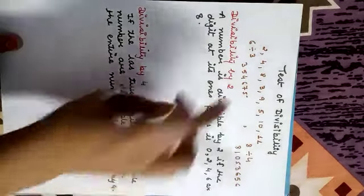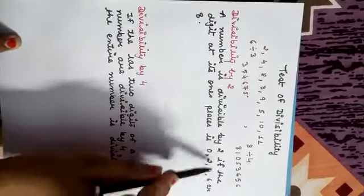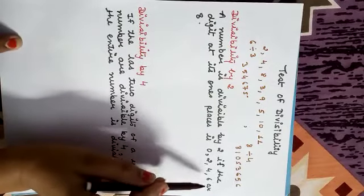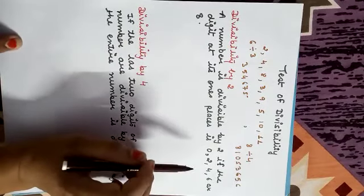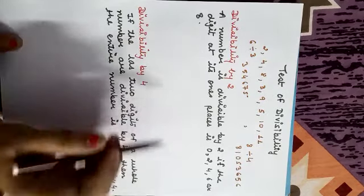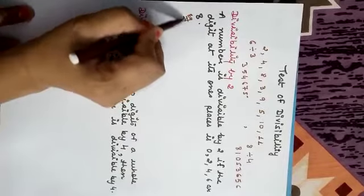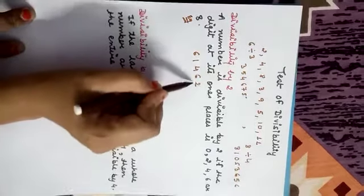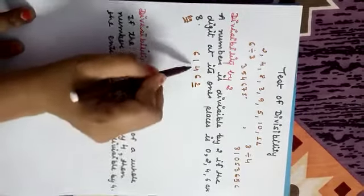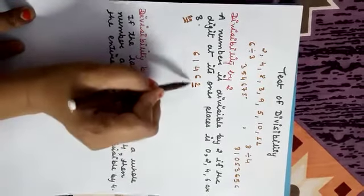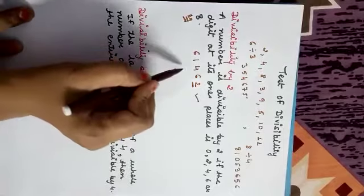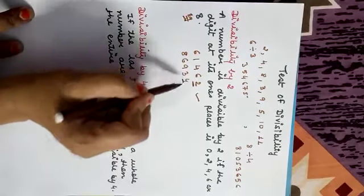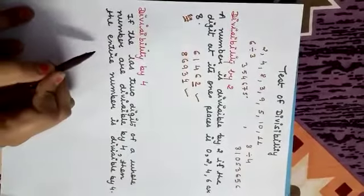Divisibility by 2: A number is divisible by 2 if the digit at its one's place is 0, 2, 4, 6, or 8 — in other words, if the last digit is even. For example, 61,462: the one's place is 2, so it is divisible by 2. Another example, 86,934: the one's place is 4, so it is also divisible by 2.